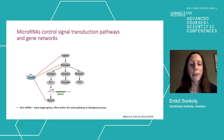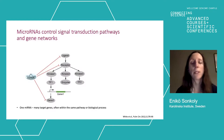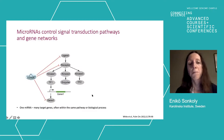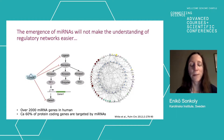These gene networks can be very complex. We have over 2,000 microRNA genes in humans, and at least 60% of our protein-coding genes are targeted by microRNAs. The emergence of microRNAs does not make understanding regulatory networks much easier.